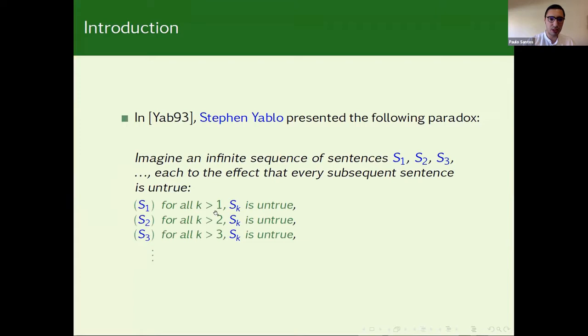First of all, it is not hard to see that this in fact leads to a contradiction, because if S1 was to be true, then all the rest of the sentences need to be false. But for instance, focusing on S2, if S2 is false, it means that there is some k greater than 2 such that S(k) is true. But we get a contradiction because that hypothetical sentence would also be greater than 1.